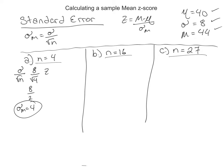And then we throw that into our new z formula. Mean minus mu divided by standard error. So our mean is 44, and our mu is 40. And we divide by, in this case, 4 for our estimated standard error. So 4 divided by 4. So our z is positive 1.00.